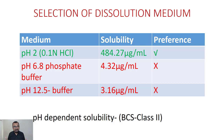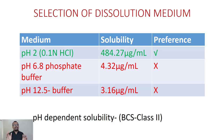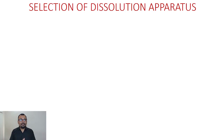Regarding the selection of volume, you can think about 500 mL or 900 mL — these are the two widely used volumes for dissolution method development. In this case, we have selected 900 mL as the dissolution volume. So we now have two important pieces of information: the dissolution medium (0.1N HCl) and its volume (900 mL).